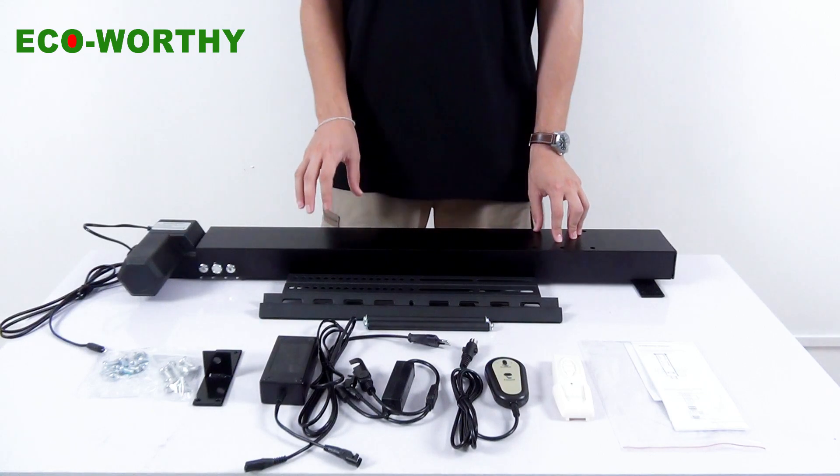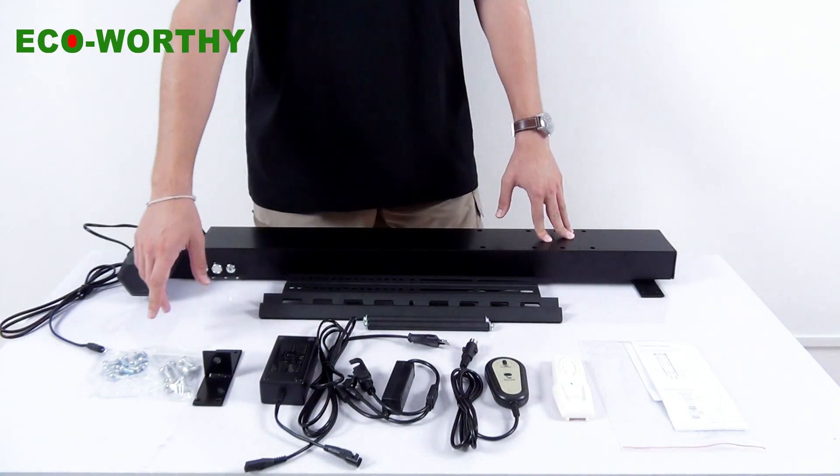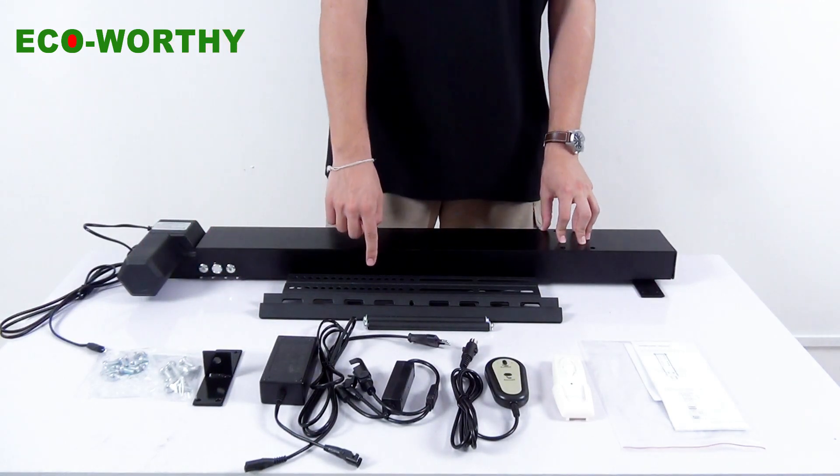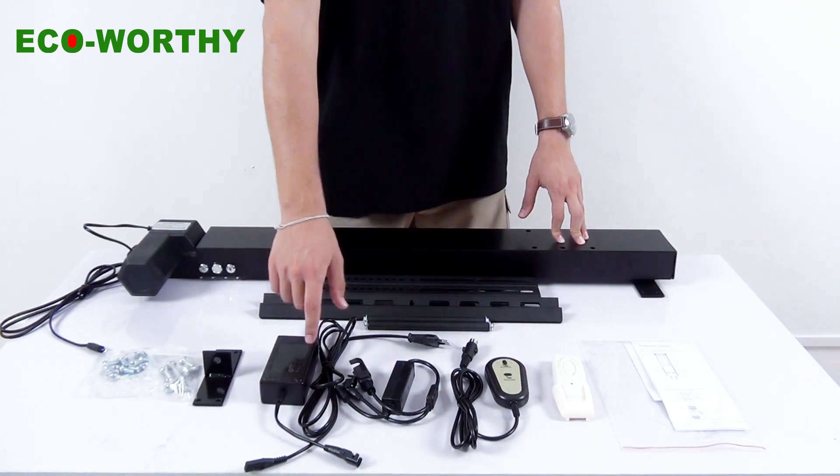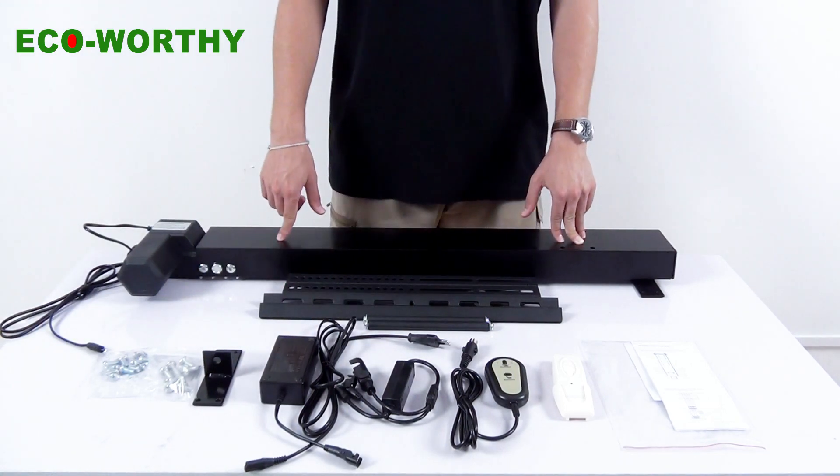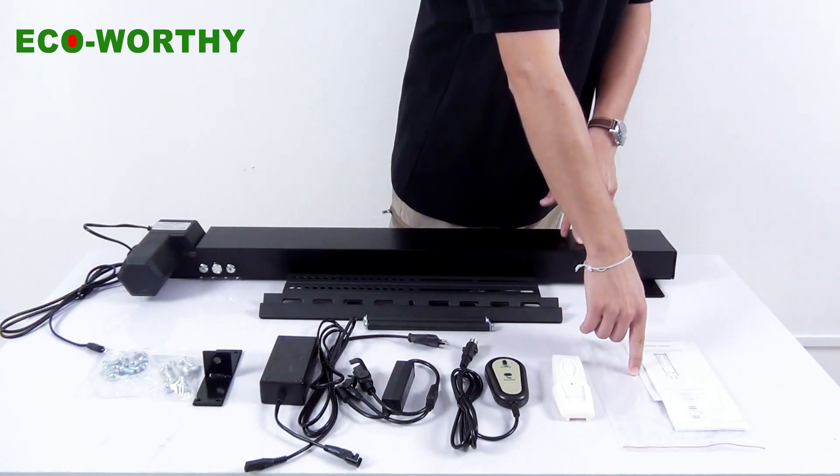When you unpack this TV motor, you will get the base and screws, a main mount, the TV brackets, the power transformer, the wires to connect the power transformer to the platform, a wired and a wireless controller, and the installation instructions.